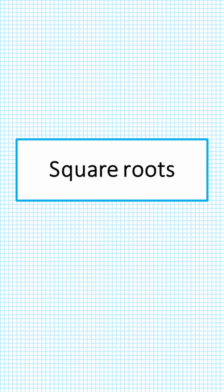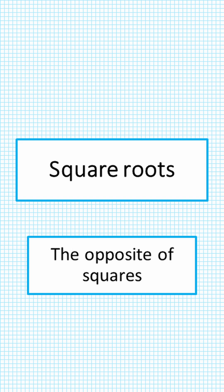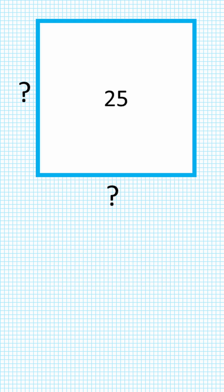Square roots. Now square roots are the opposites of squares. So if we have a square and we know the area but we don't know what the sides are, that's when we would need to use a square root.